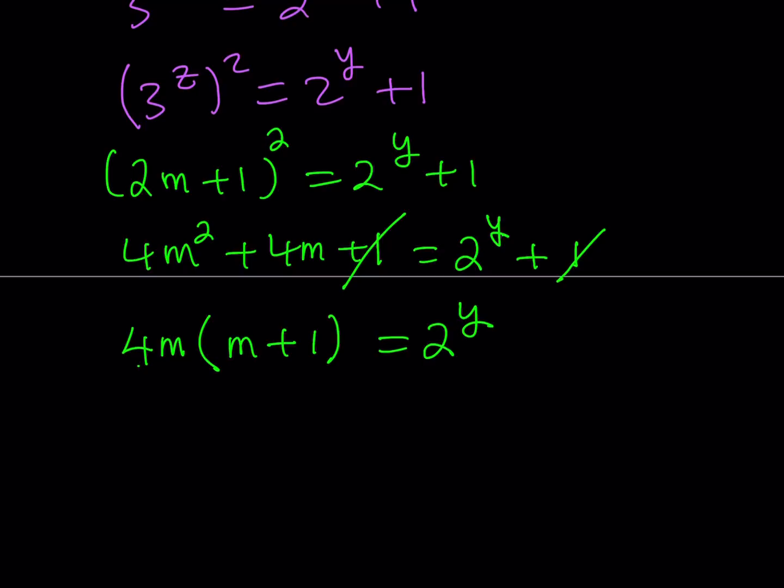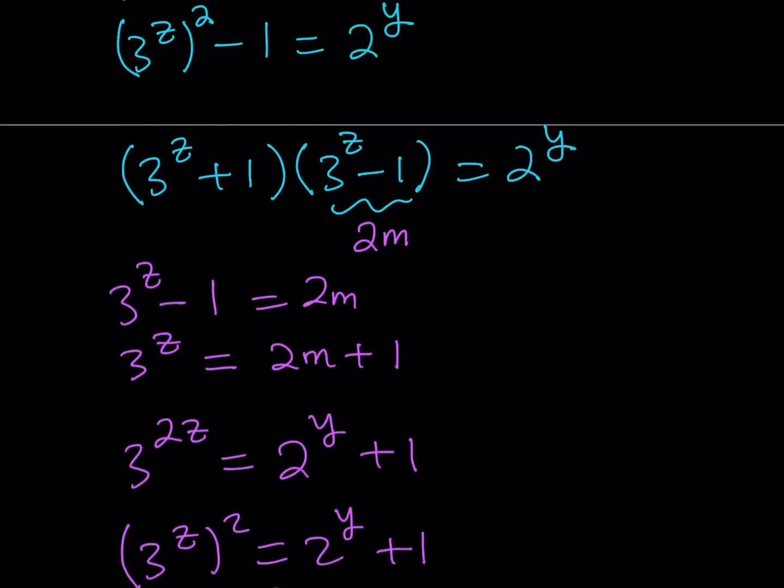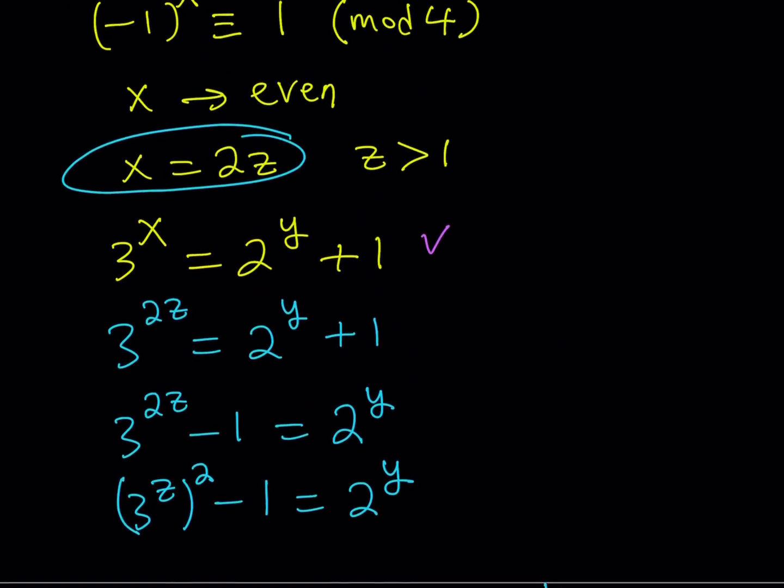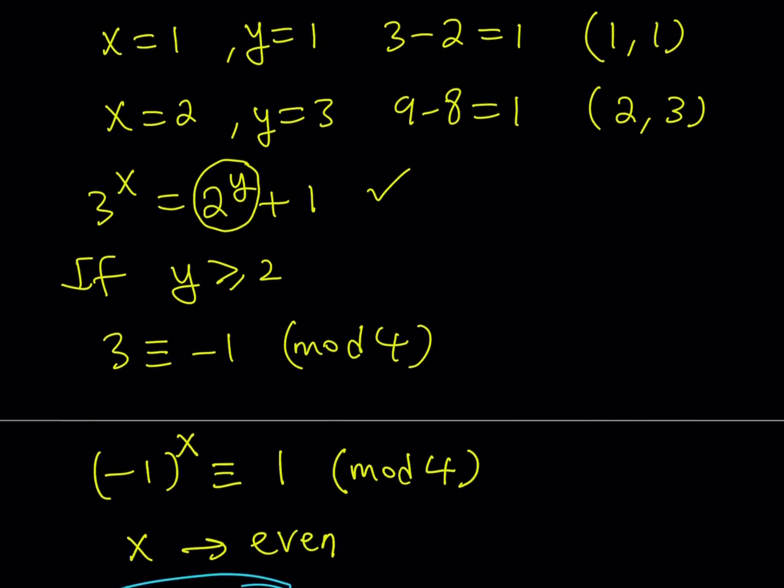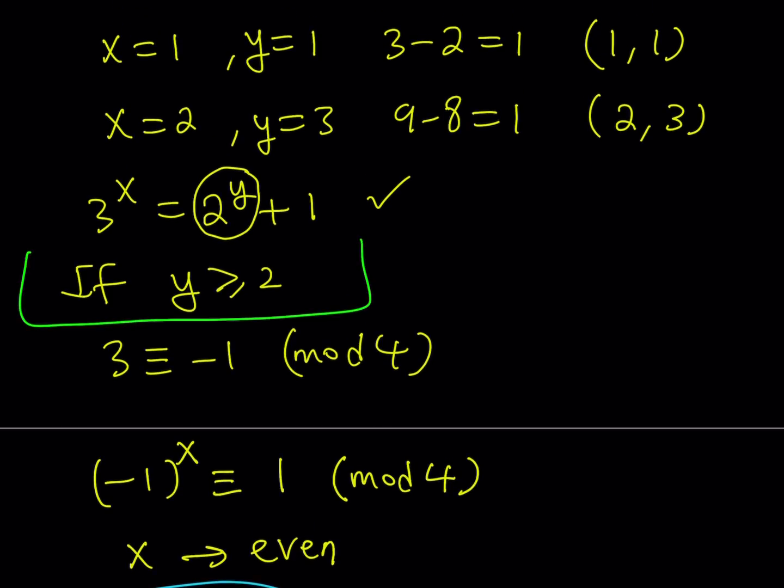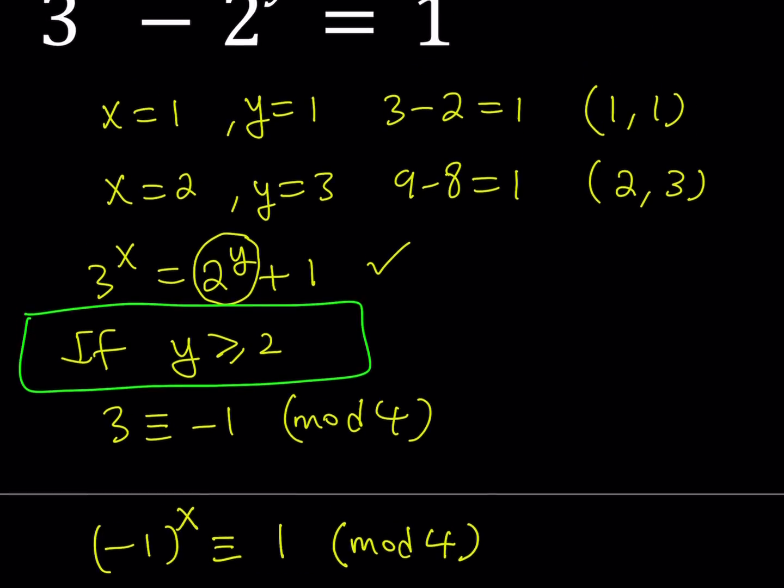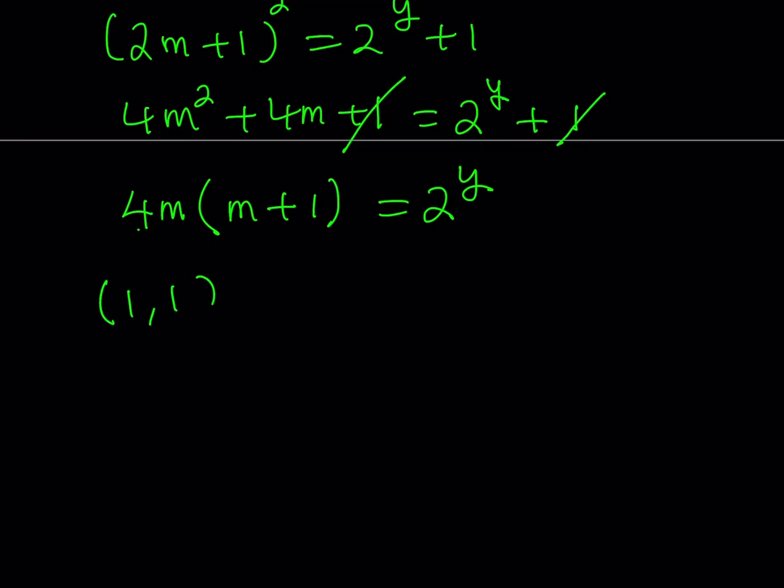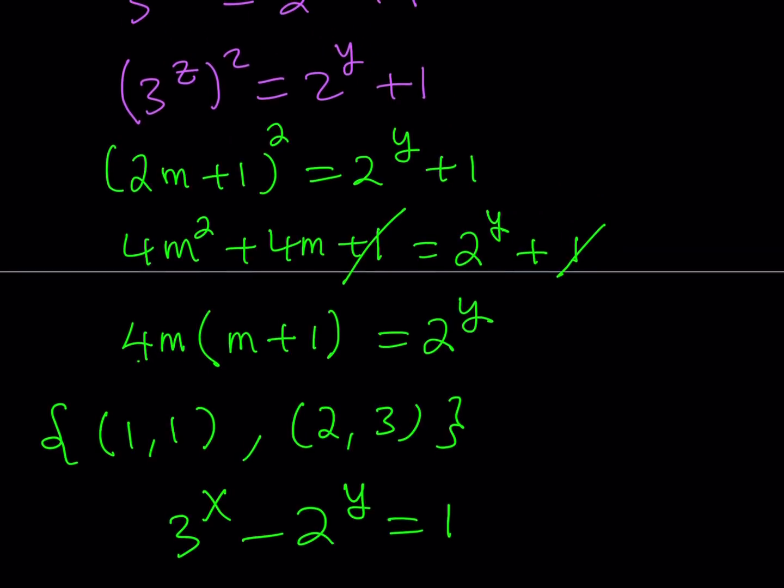So our assumption that y is greater or equal to 2 doesn't give us anything, which means that we don't really have any solutions for y greater than or equal to 2. We said that if this is true then the following holds, but unfortunately that doesn't really give us anything. We have 1 comma 1 and 2 comma 3 as our solution to this equation, which can be written as 3 to the power x minus 2 to the power y equals 1.